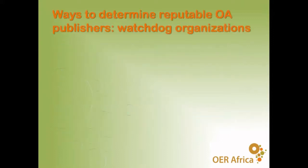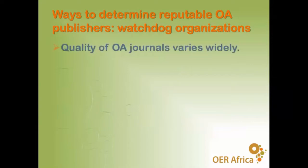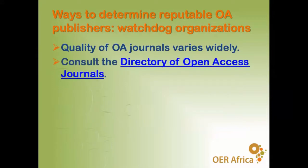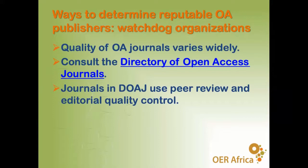In hybrid journals, one should note that the publisher is making two sets of profit — through subscriptions and through the author fee. There are increasing numbers of quality open access journals. To determine what a reputable open access journal looks like, there are watchdog organizations. One of the best resources is the Directory of Open Access Journals (DOAJ). If you don't know about it, note down that name, because DOAJ will tell you which open access journals are high quality. All journals listed in DOAJ use proper peer review, editorial control, and quality control processes.